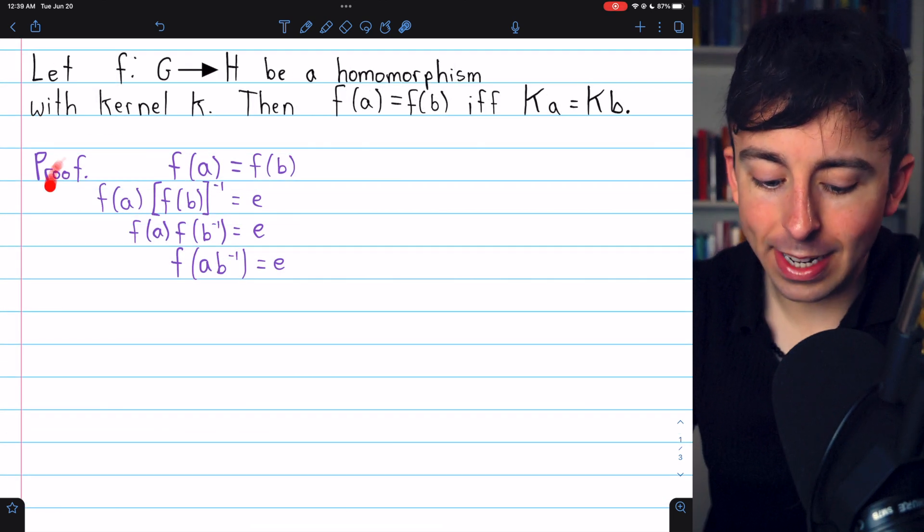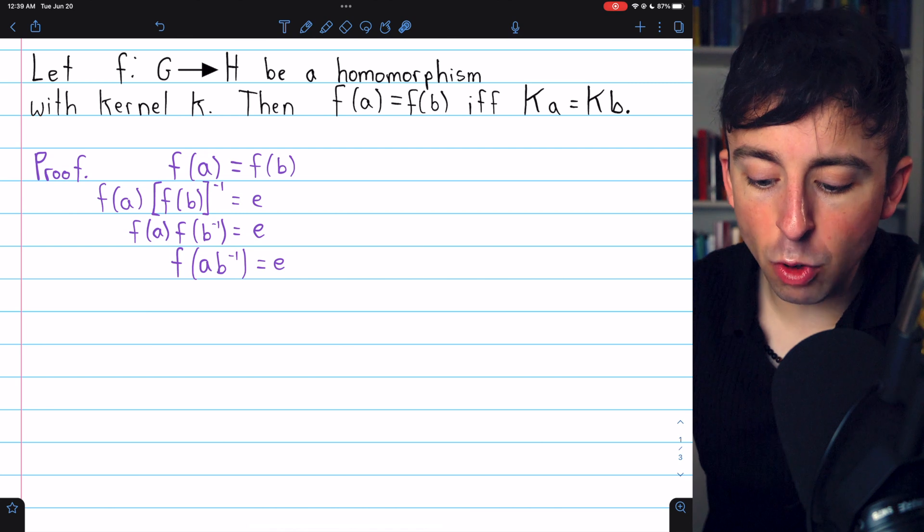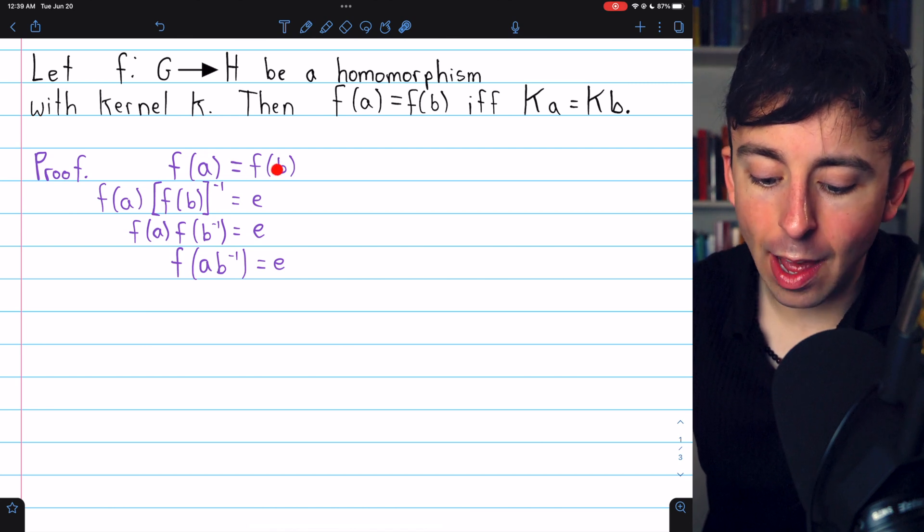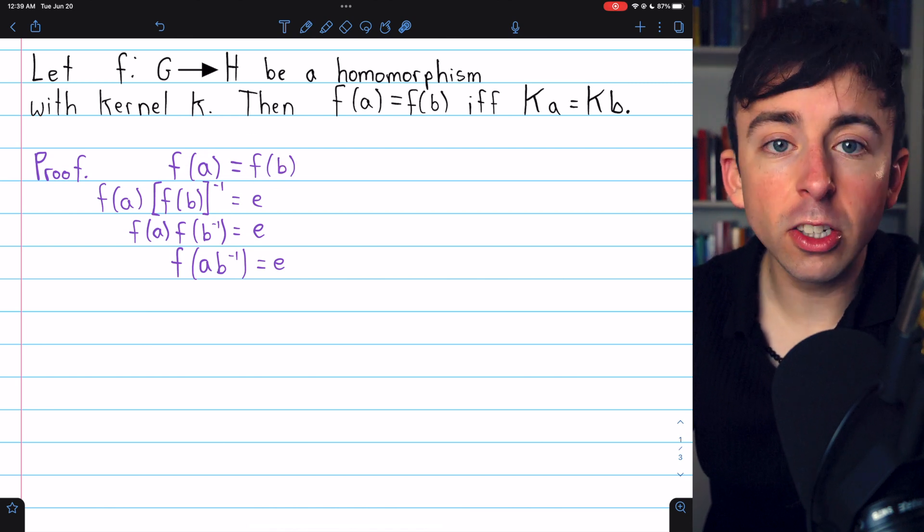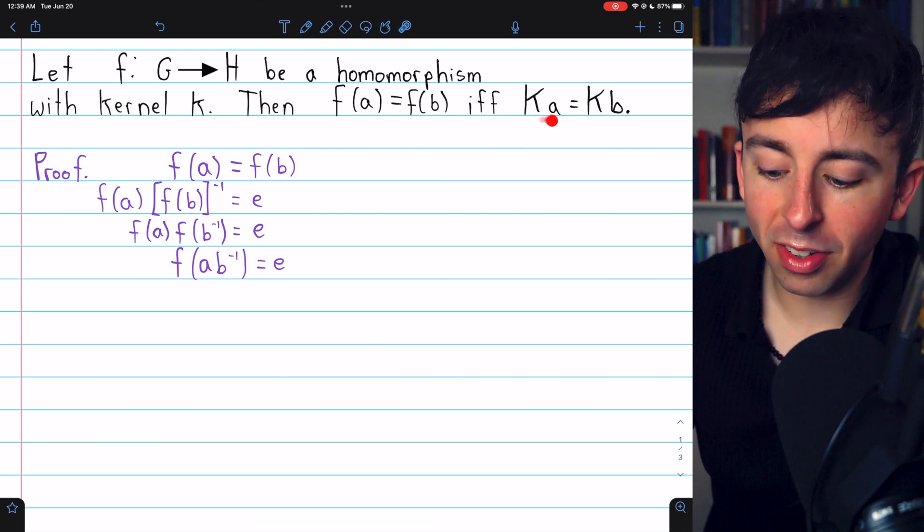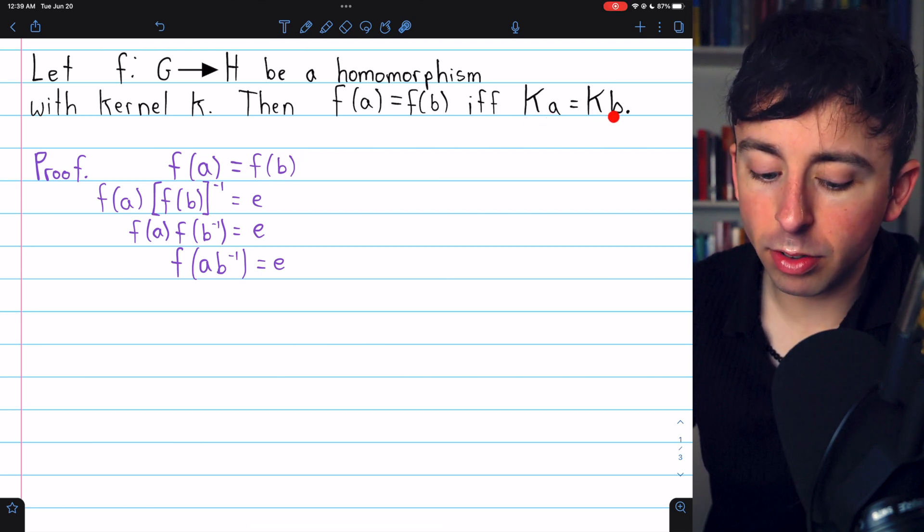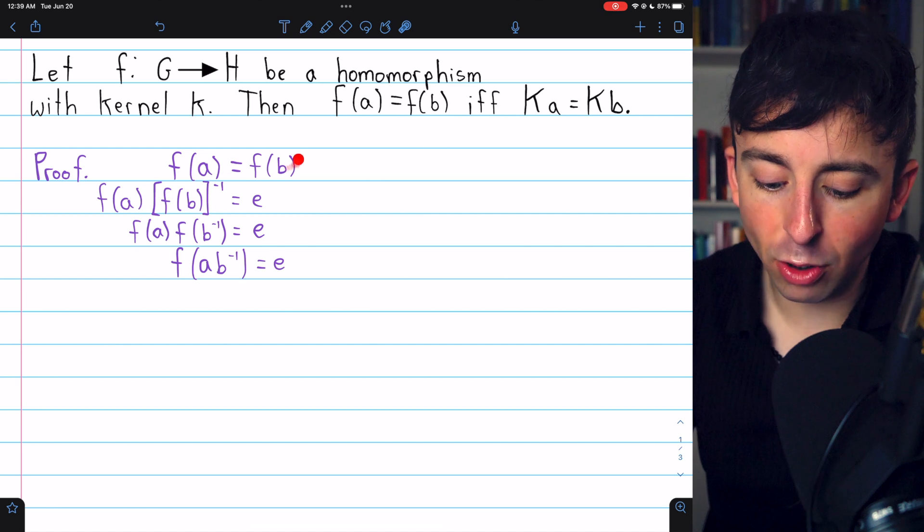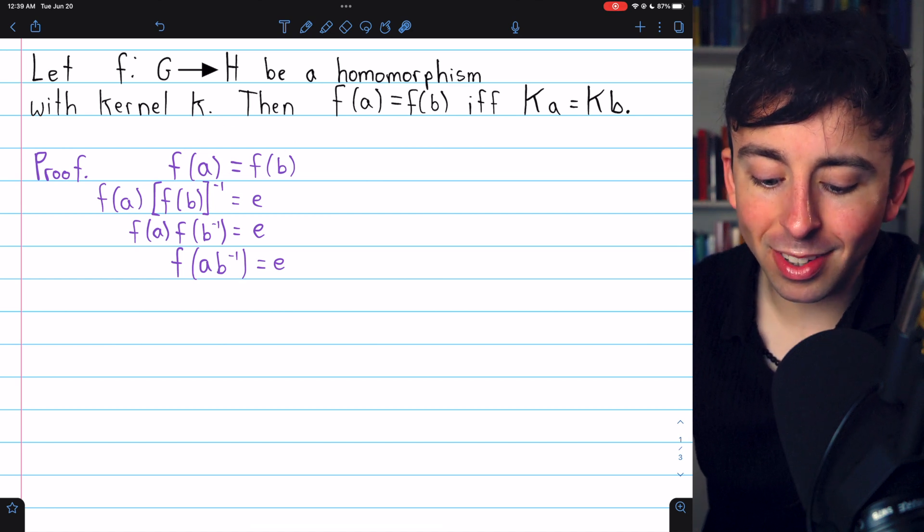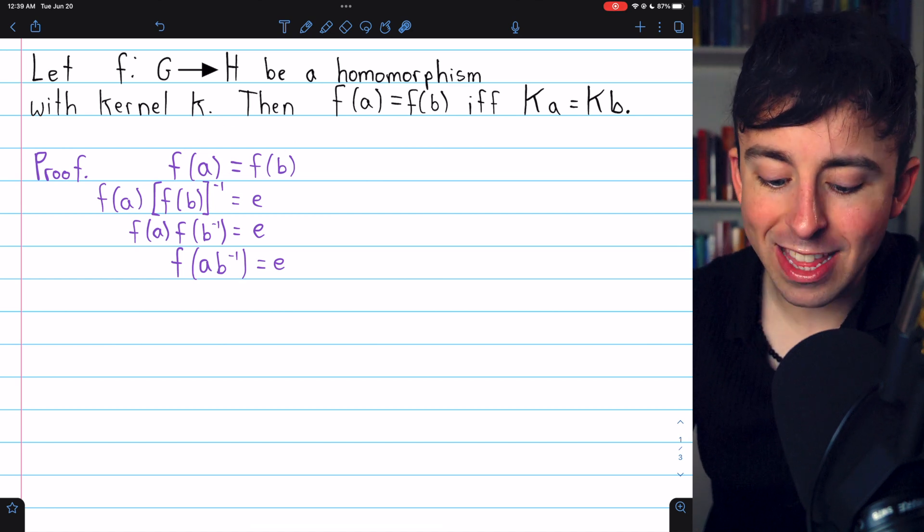The proof is really easy, and here it is. We'll begin by assuming that F(a) equals F(b). Using this knowledge, we want to prove that the coset Ka equals the coset Kb. So coming back to this equation, we can multiply both sides on the right by the inverse of F(b).